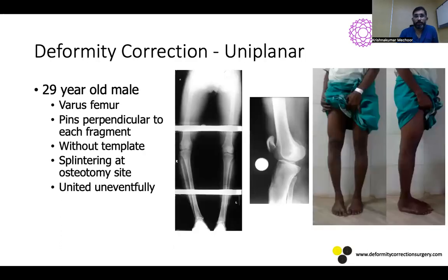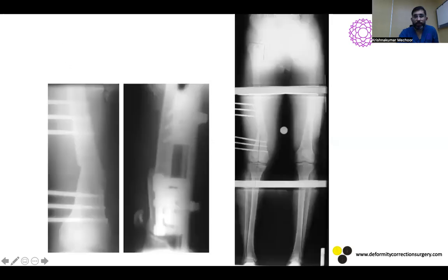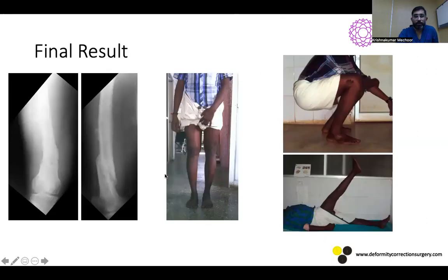For uniplanar deformity correction, in a 29-year-old male with varus femur, you cannot use templates, so pins are placed perpendicular to each fragment freehand, an osteotomy is performed, and the deformity is corrected. There was a splinter at the osteotomy site but it did not affect fixation stability. A slight translation is visible on the lateral view due to freehand pin placement, but this is not of much clinical significance.